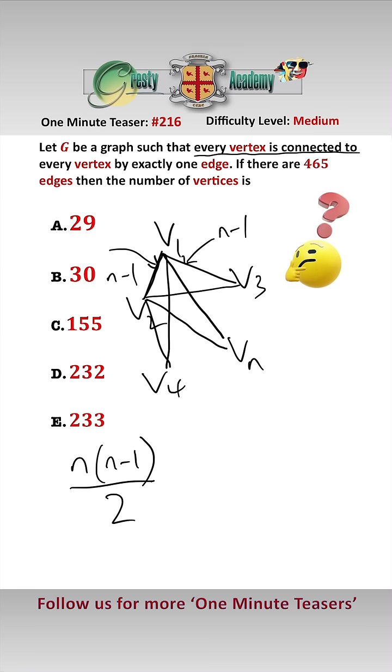However, this question asks every vertex connected to every vertex, not every other vertex, so we have to include self-loop edges which connect the vertex to itself, and there are clearly going to be N of those. And we know that equals 465.